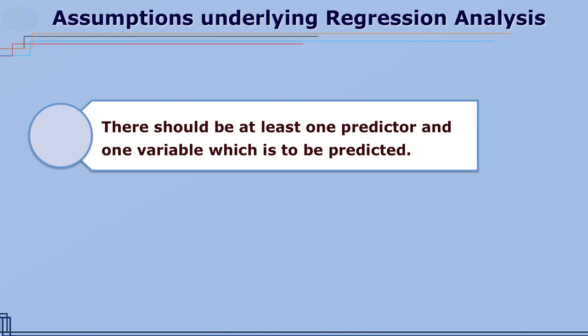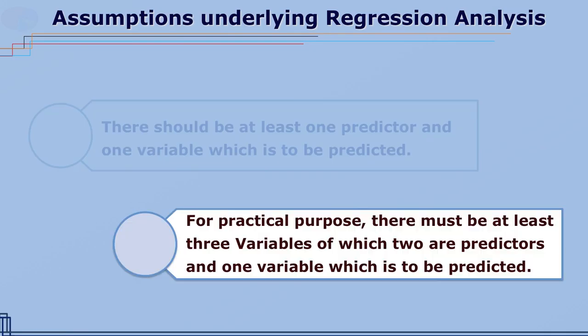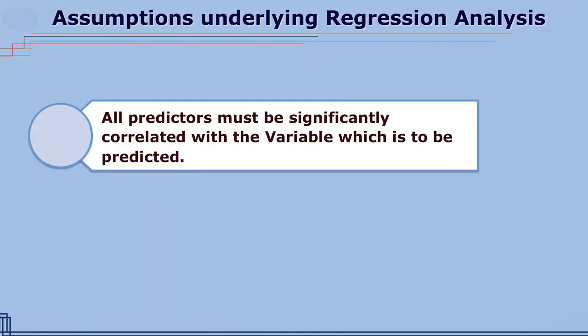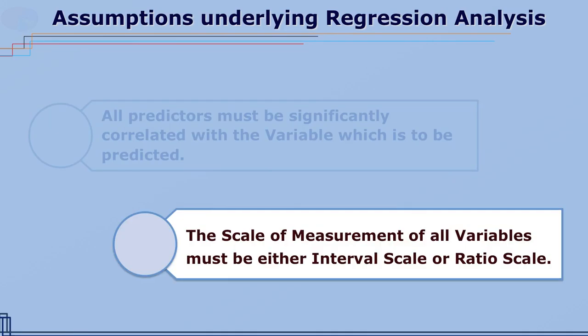Different assumptions underlying regression analysis are: number one, there should be at least one predictor and one variable which is to be predicted. Second, for practical purposes, there must be at least three variables, of which two are predictors and one is to be predicted. Third, all predictors must be significantly correlated with the variable to be predicted. And the last one, the scale of measurement of all variables must be either interval scale or ratio scale.